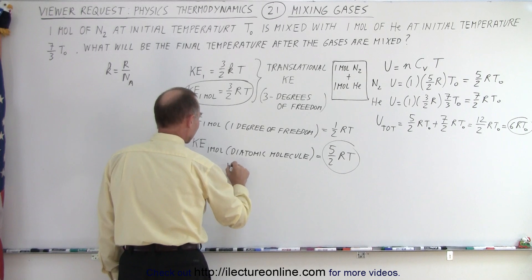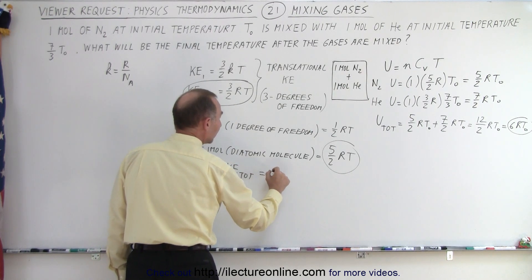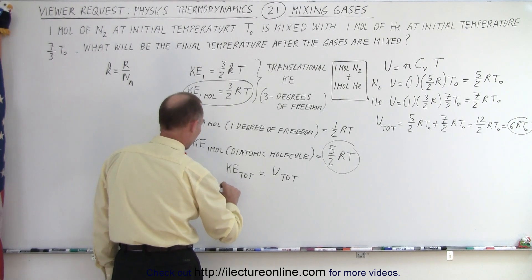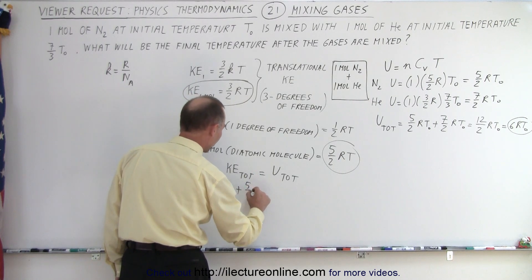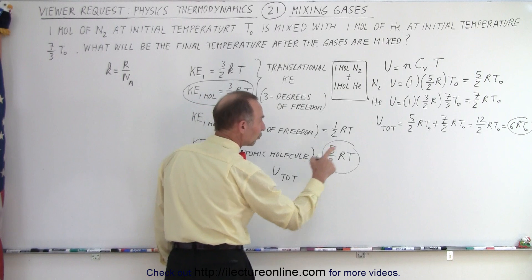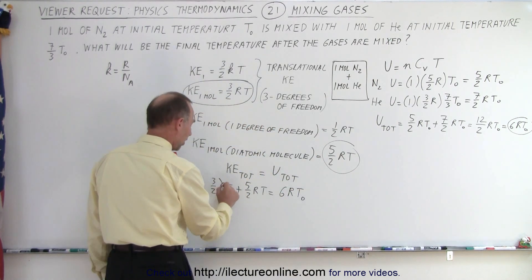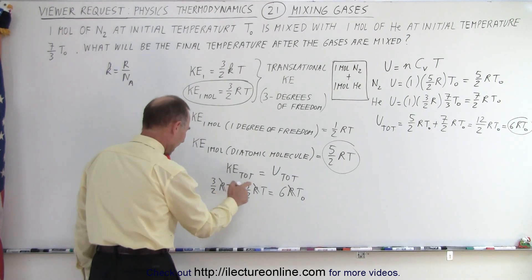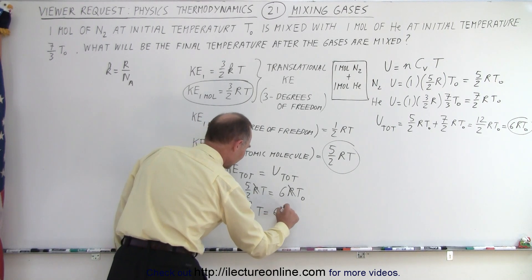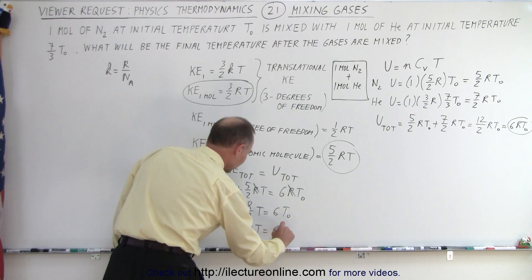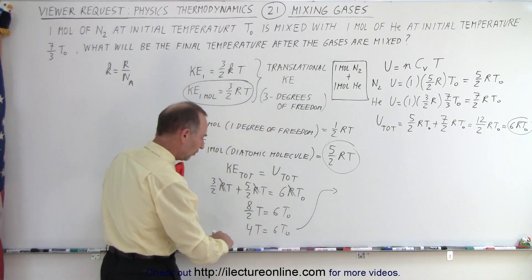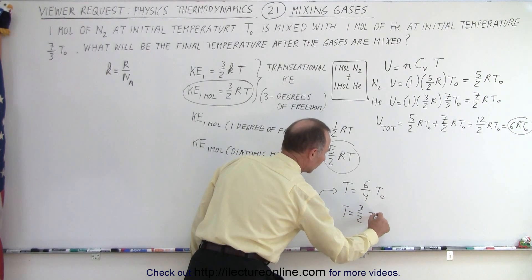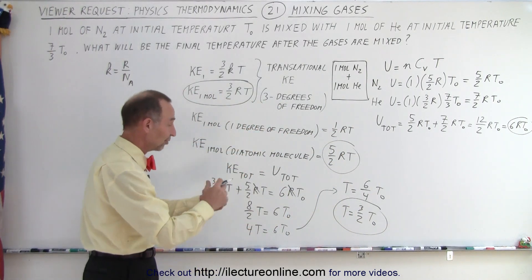Now we can say that the total kinetic energy must equal the total internal energy. The kinetic energy for helium is 3/2 RT, and for nitrogen it's 5/2 RT, and these must add up to the total internal energy of 6 RT₀. The R's cancel out, and we solve for temperature: 8/2 T = 6 T₀, so 4T = 6 T₀, which means T = 6/4 T₀ = 3/2 T₀. That is the final temperature of the mixture.